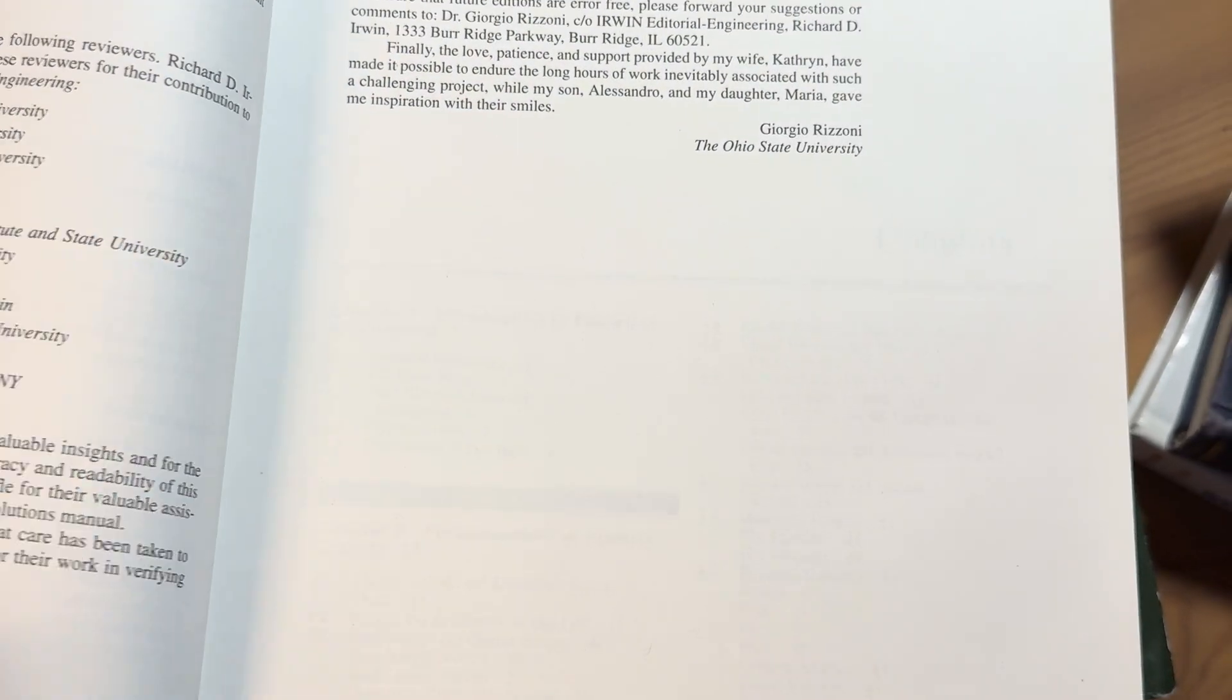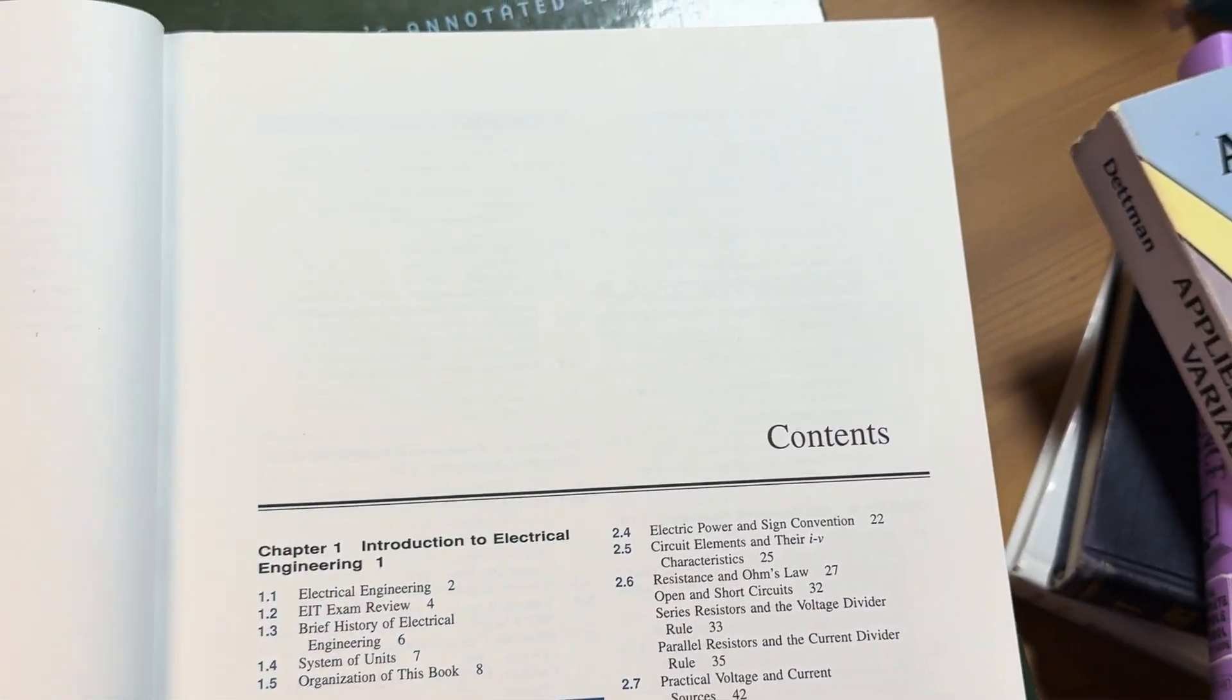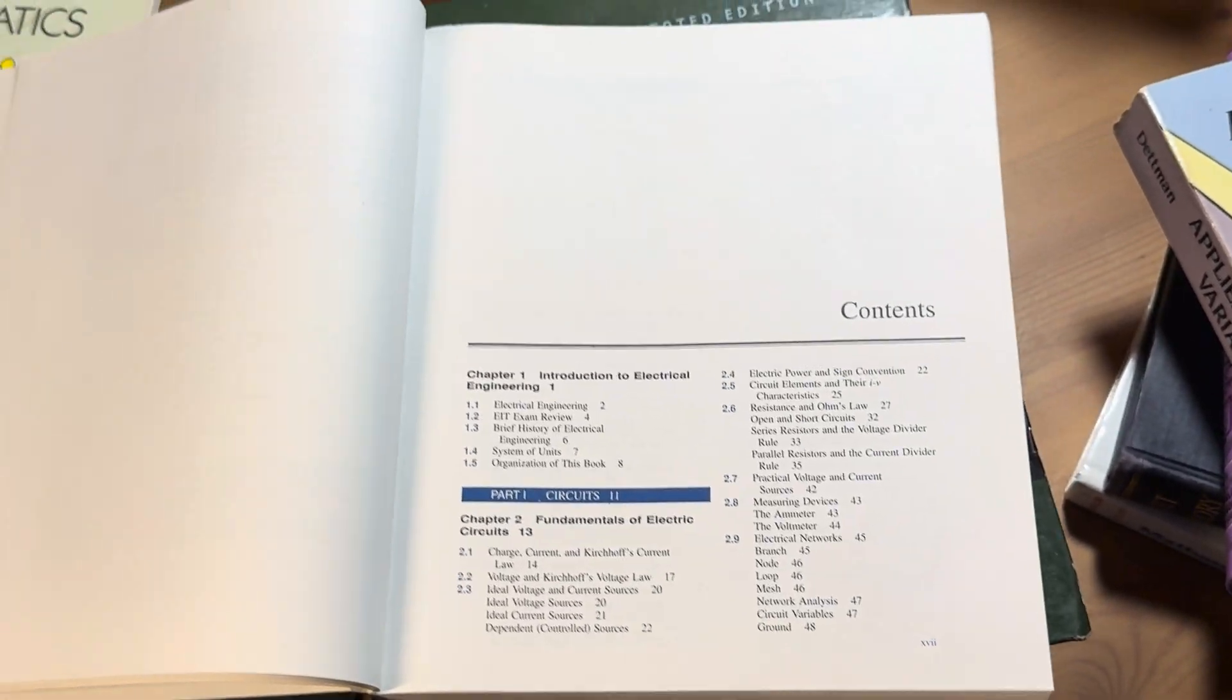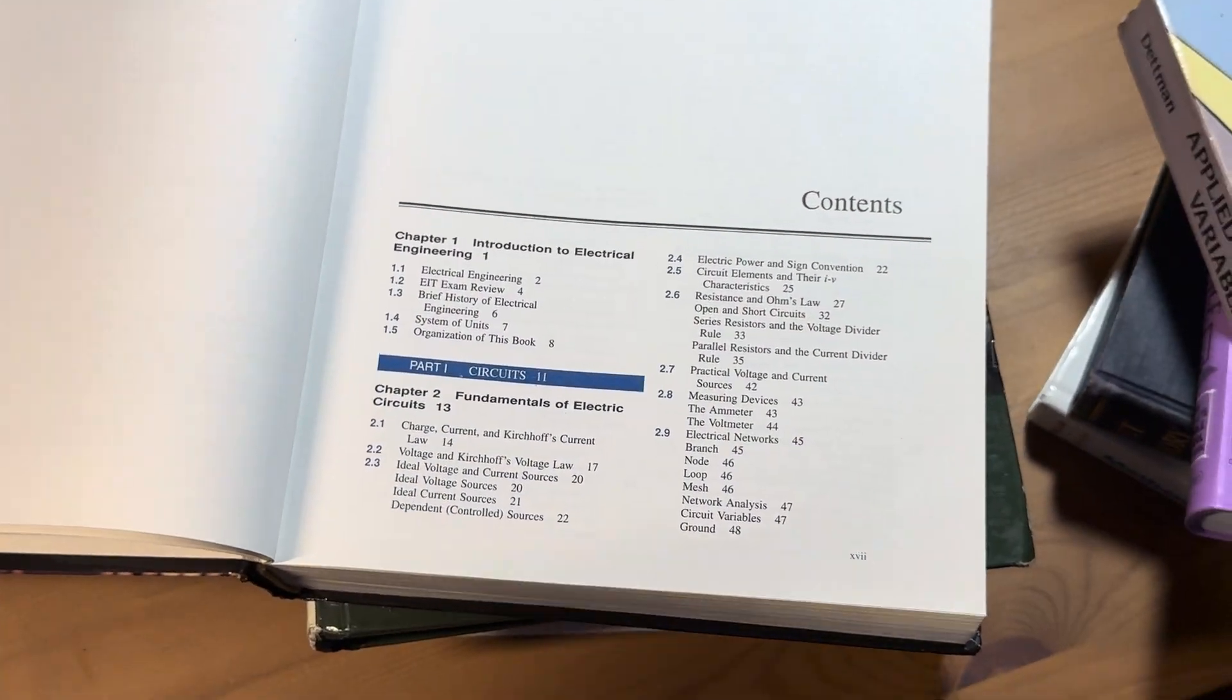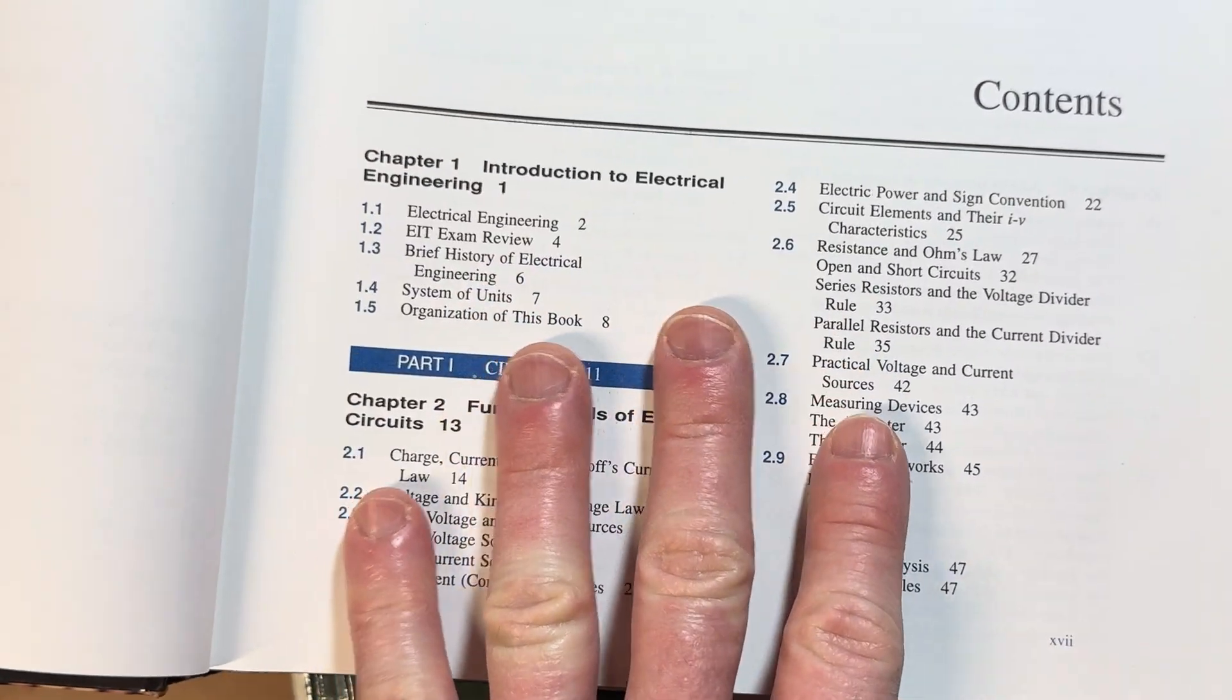So that's typically how books are written. You have professors who have their notes and then from the notes you have basically an organized outline of material that you've been using to teach for years. So that becomes a book.